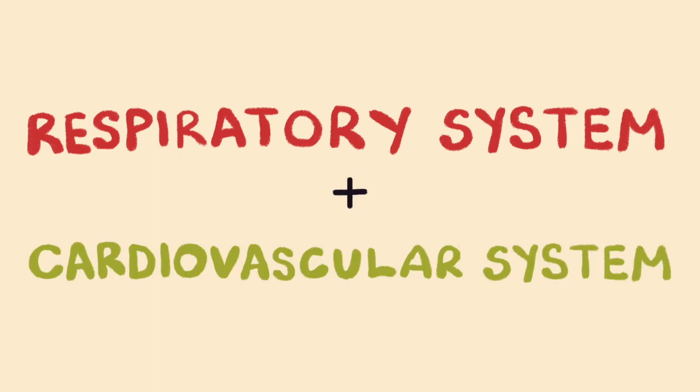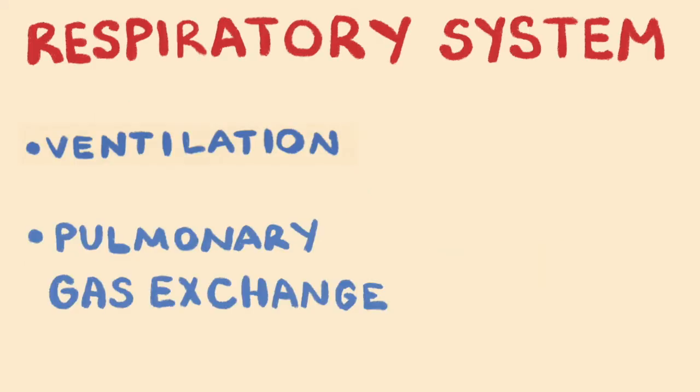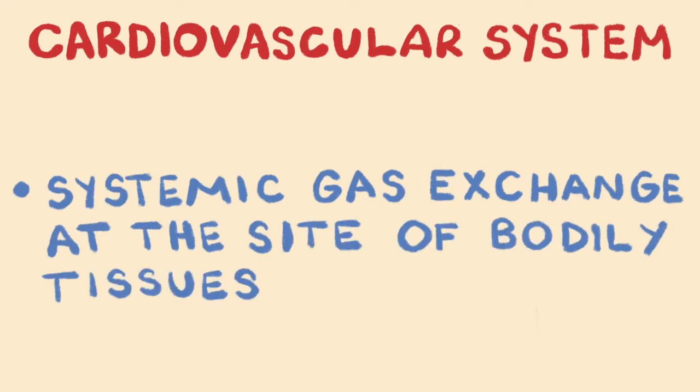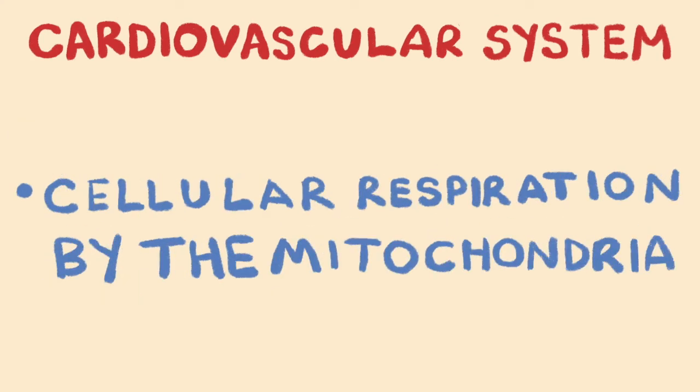The respiratory system and cardiovascular system being so closely connected is a prime example of how body systems interact. Without the respiratory system, the cardiovascular system could not do its job, and therefore all the cells would become starved of oxygen, acidified from a buildup of carbon dioxide, and would cease functioning.